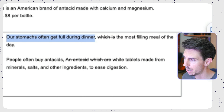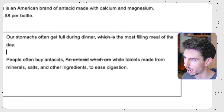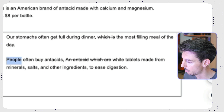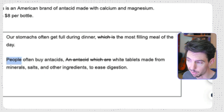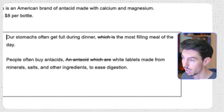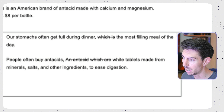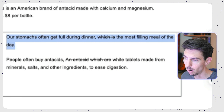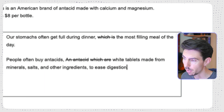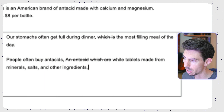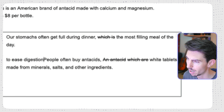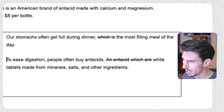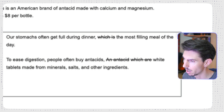In our example: 'Our stomachs often get full during dinner' ends with the definition of dinner as an appositive. But the next sentence begins with 'people,' which is kind of strange because we haven't talked about people — we're basically putting new information at the beginning of the sentence, and then old information — easing digestion, which links more logically to the previous sentence — comes at the end. So it would be a lot better to take the infinitive clause and put it at the beginning: 'To ease digestion, people often buy antacids, white tablets made from minerals, salts, and other ingredients.'